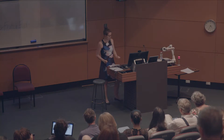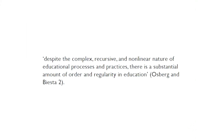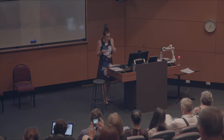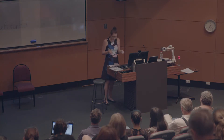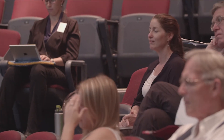Or, to put it in Osberg and Biesta's terms, despite the complex, recursive and non-linear nature of educational processes and practices, there is a substantial amount of order and regularity in education. So how do we account for this? Osberg and Biesta argue that educational systems actually reduce their own complexity in order to enhance that order and regularity — to enable greater control over the system. The importance of control in educational systems raises the question of where power lies.